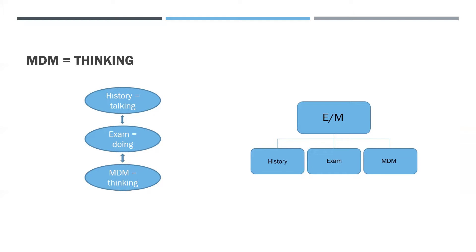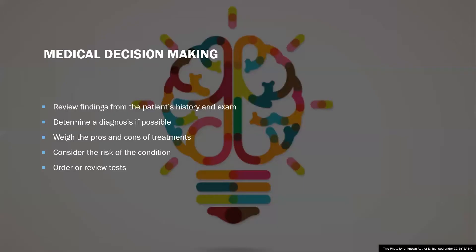The history, exam, and medical decision-making make up an E&M code and help determine the level. If the history component was 'talking' and the exam component was 'doing,' then the MDM component is 'thinking.' For MDM, it is really important that documentation reflect the correct level, because this can guarantee or prevent accurate selection of the E&M service level. The physician will be reviewing findings from the patient's history and exam, determining a diagnosis if possible, and weighing pros and cons of treatment.